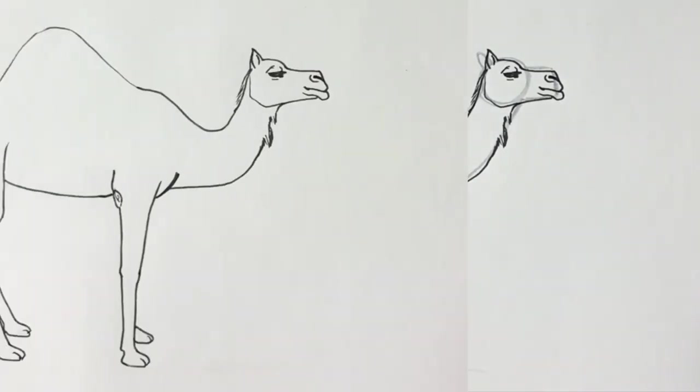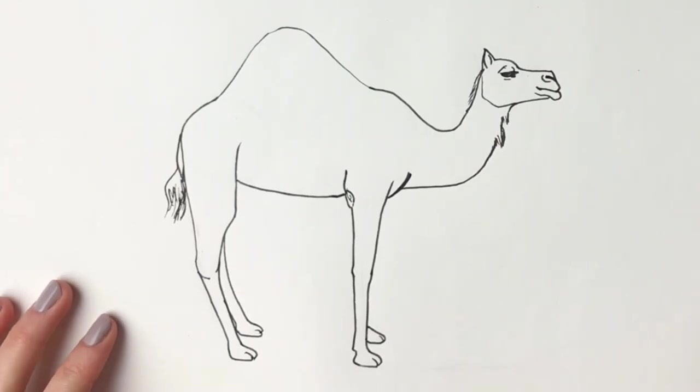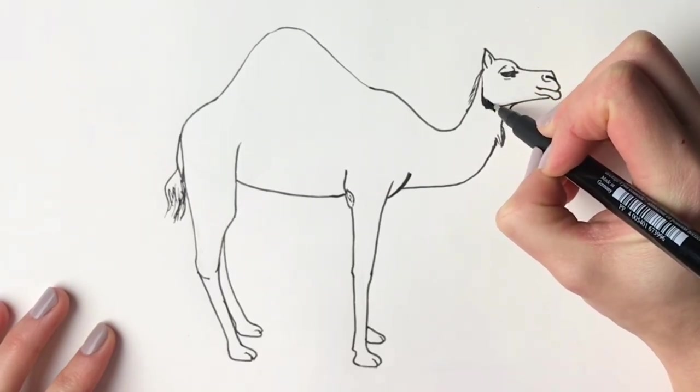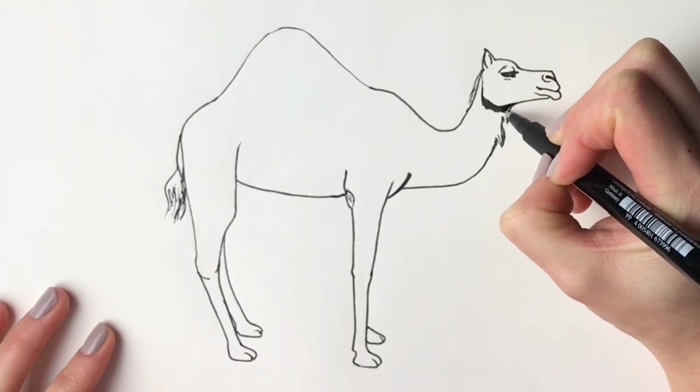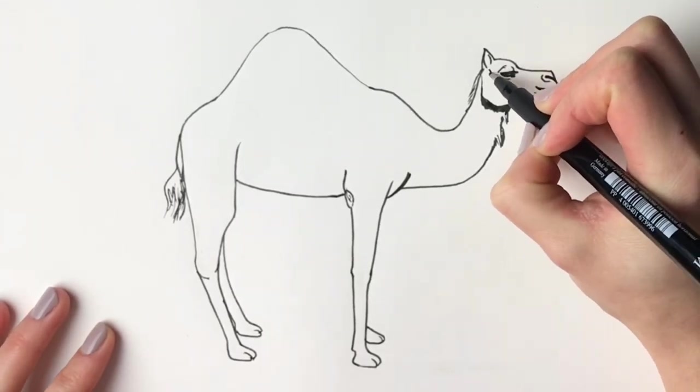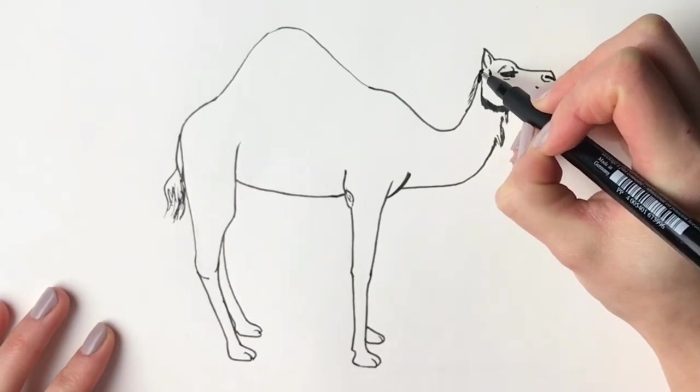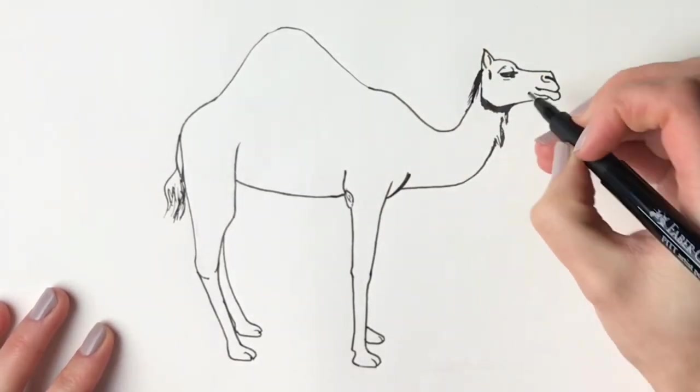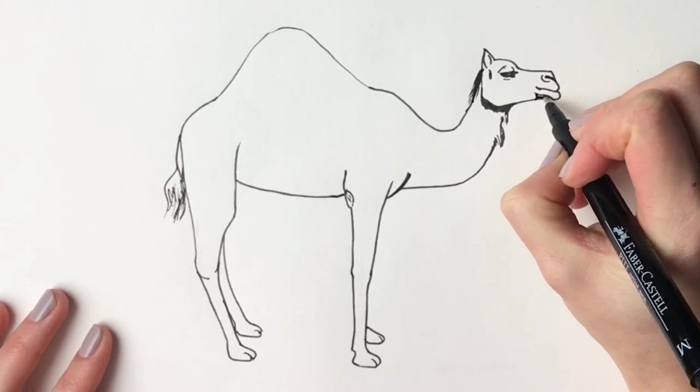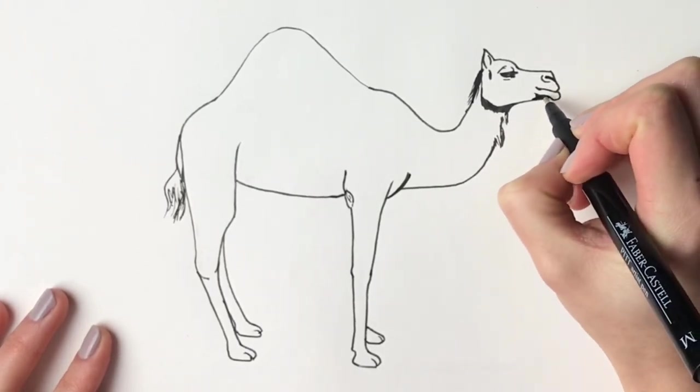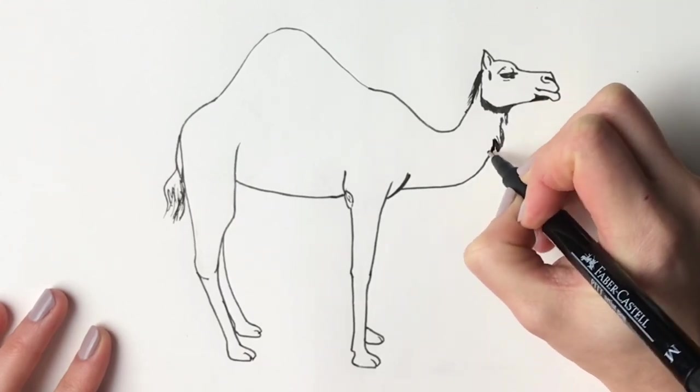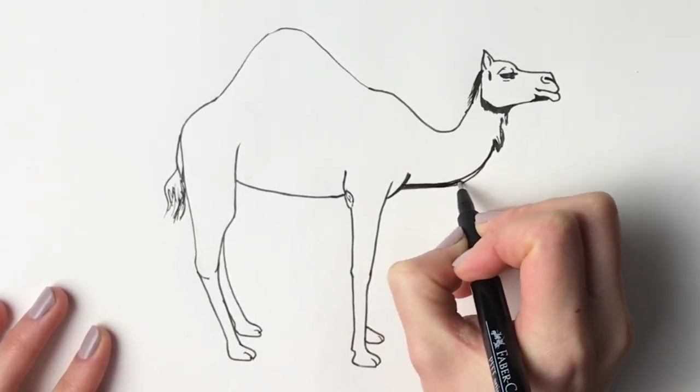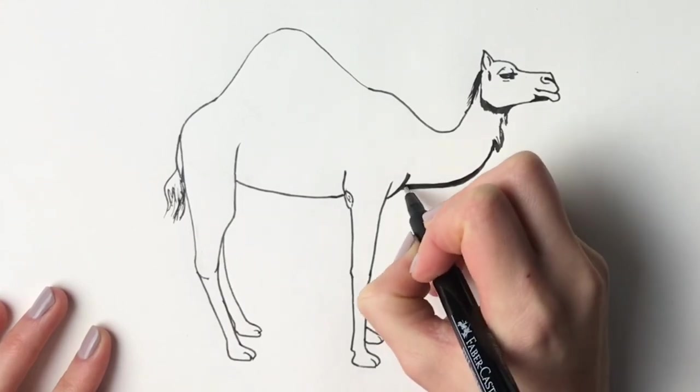I'm now going to rub out all the pencil lines. So I've rubbed out all the pencil lines so you can see it a bit better. And I'm just going to add some shading and some shadows. Just really simple shading, just in the areas where the sun won't reach and it's in shadow. So just under the chin now. Just behind the ear. Because the sun's coming from this direction if you can imagine that. Just underneath the lip a little bit. So all the way underneath the neck. I'm just going to do some really really dark shadow because the light's quite intense.